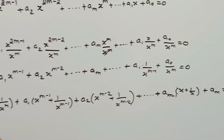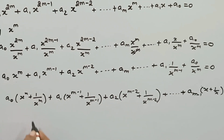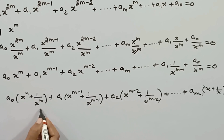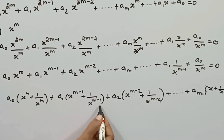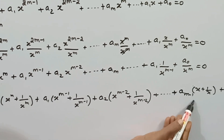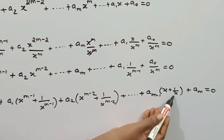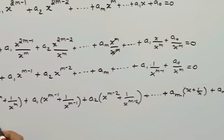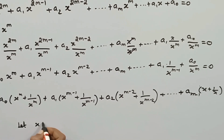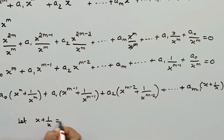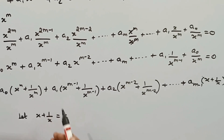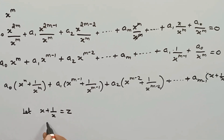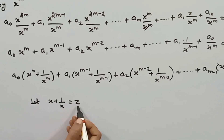This confirms the reciprocal structure discussed in the previous video — the standard form has like signs. Now we introduce the substitution: let x + 1/x = z. By substituting this into the given equation, we can reduce its dimension by half.